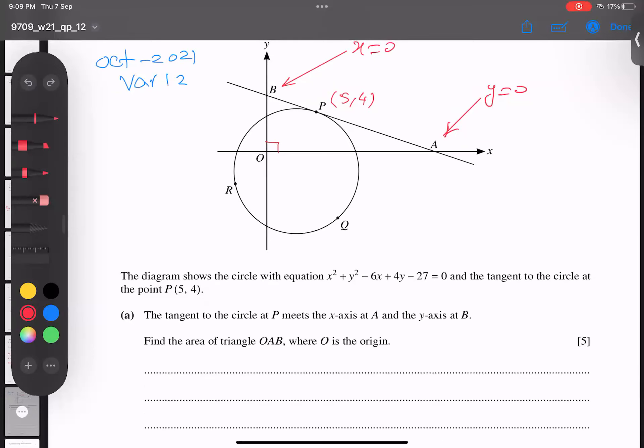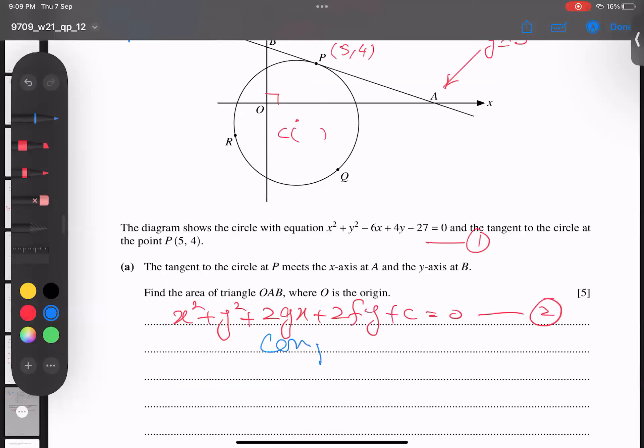So first of all, can I find directly the equation of tangent? No way. I have only one choice - if I have a center. Center is compulsory to get it. So let's try to find the center. I give this a name as equation number 1, and the standard equation x² + y² + 2Gx + 2Fy + C = 0 as equation number 2. If you compare both equations, students, 2G equals negative 6, so G becomes negative 3. 2F equals 4, and F becomes 2.